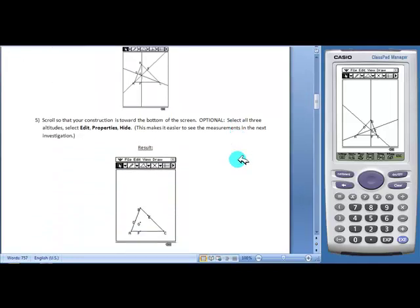Students can opt to hide the altitudes to make the orthocenter easier to see. To do this, students will have to select all three altitudes.